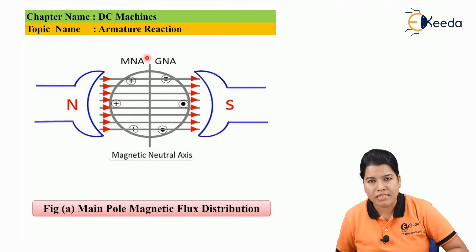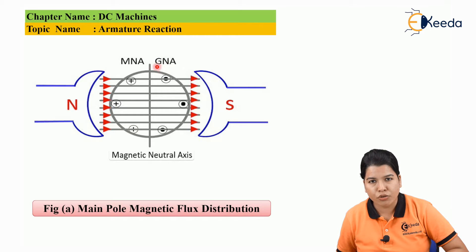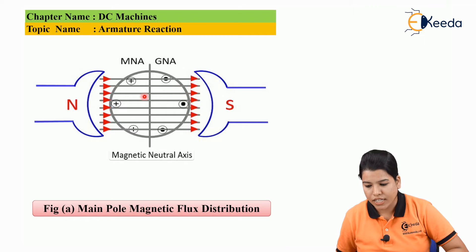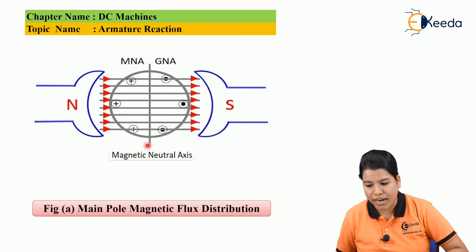MNA is called as the magnetic neutral axis and GNA is called as the geometric neutral axis. The magnetic neutral axis consists of brushes; hence, this axis is also called as the axis of commutation. The magnetic neutral axis is always perpendicular to the resultant flux. Here, these lines show the flux from north pole to south pole, and we can see that the magnetic neutral axis is exactly perpendicular to the resultant flux.